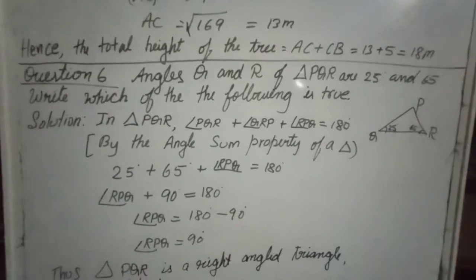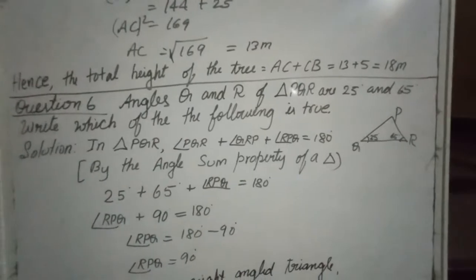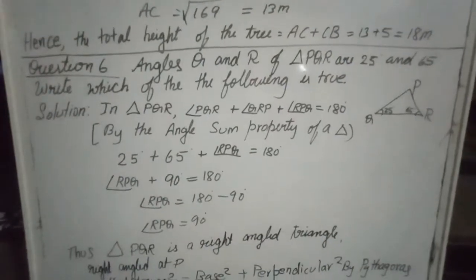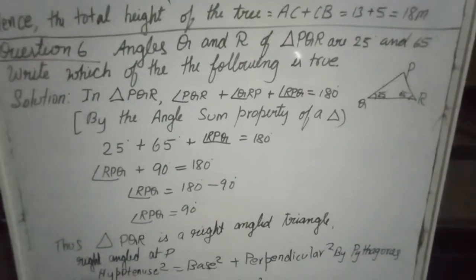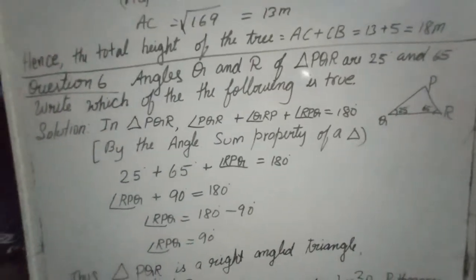Thus, PQR is a right angle triangle at P. Hypotenuse square is equal to base square plus perpendicular square by Pythagoras theorem.